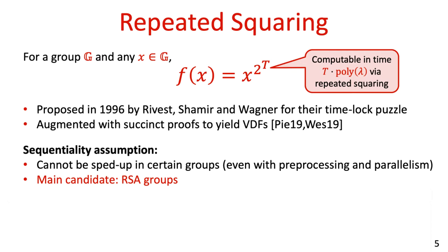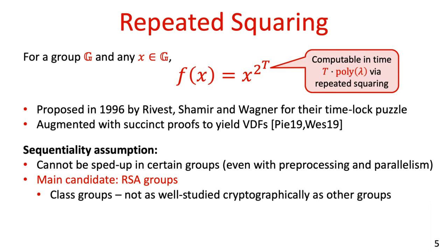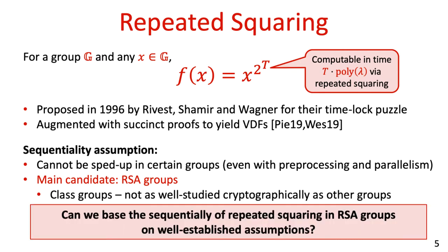The repeated squaring function indeed offers the sufficient structure needed for timelock puzzles and for VDFs. It was first proposed by Rivest, Shamir and Wagner as the basis for their timelock puzzle, and it was recently and elegantly augmented with succinct proofs yielding efficient VDF constructions. The sequentiality of the repeated squaring function is based on the assumption that there are groups in which it is impossible to significantly speed up the function's computation even with preprocessing and with parallel processors. A necessary condition for this assumption to hold is that the group's order is unknown. The main candidate in cryptography for such groups is the family of RSA groups.